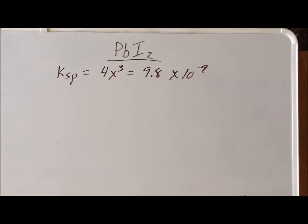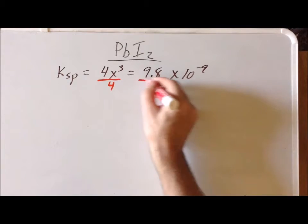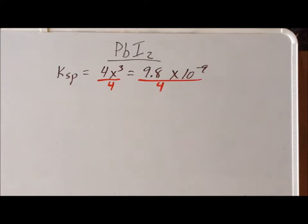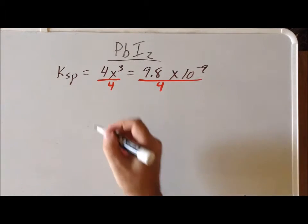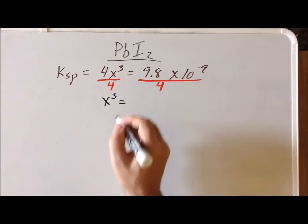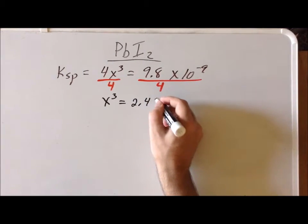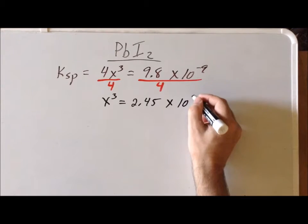Next, we combine our two expressions for the Ksp. On one hand, we know its numerical value is 9.8 times 10 to the minus 9. And we also know that by algebra, we have set it equal to this expression 4x cubed. Now, as we typically do, we want to solve for x. Our first step is simply to divide each side by 4. Once we have done that, we get that x cubed is equal to 2.45 times 10 to the minus 9 power.